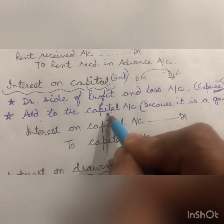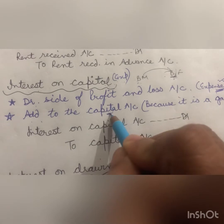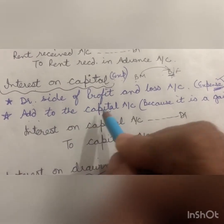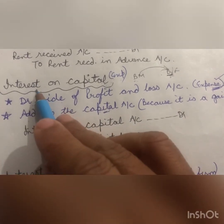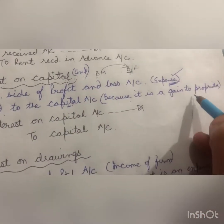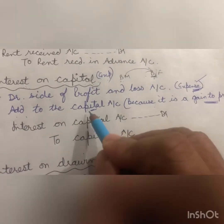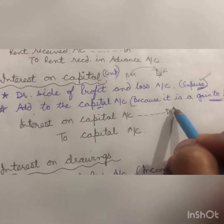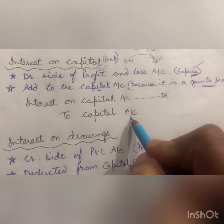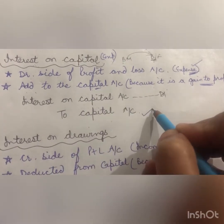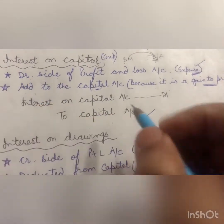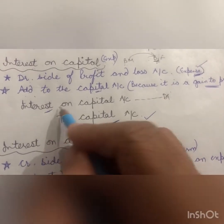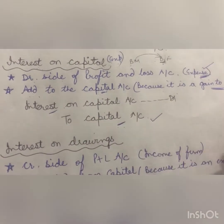The firm is paying this interest to the proprietor, so it is an expense for the firm — it will go on the debit side of the Profit and Loss account. The interest goes to the businessman, so it will be added to his capital account on the liability side of the Balance Sheet. The adjustment entry is: Interest on Capital Account debit, to Capital Account. The interest is credited to capital and debited as a firm expense.